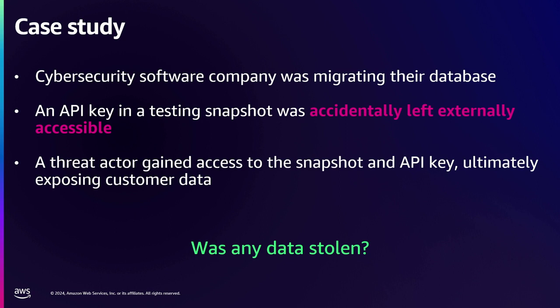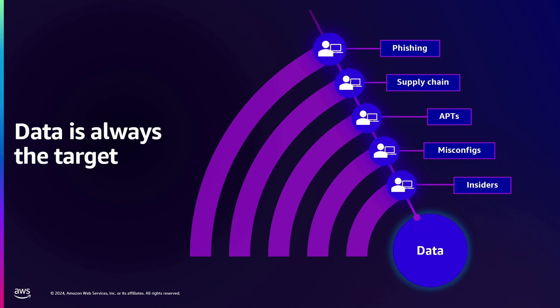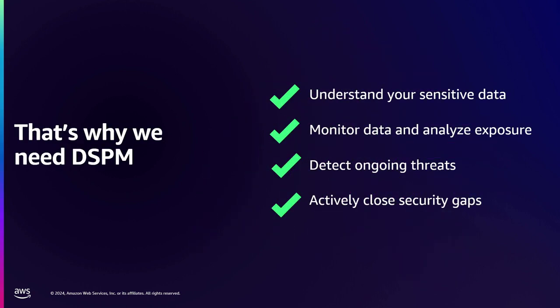When we think about how threat actors operate, data is always the target. We might not know where the next attack is going to come from — there are always new zero-day vulnerabilities and new threat techniques. Despite all the investment organizations make in securing the endpoint, the firewall, or a posture management tool, we still see data breaches all the time. Data tends to be the soft, gooey center of most organizations. We have to operate in an assume-breach scenario: it's a when, not an if, that someone's going to get into our environment. How much damage can be done? How exposed is our data? If you don't have that context, you're really flying blind. This is why we need data security posture management.